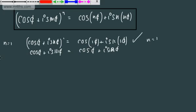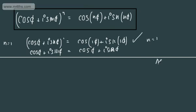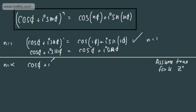Our inductive step now is to assume that it holds true for n equals k, where k is a positive integer. So our induction says: we've shown it holds true for n equals 1; now assume true for k, where k is a positive integer. So what we can write is: when n equals k, cos θ plus i sin θ to the power of k equals cos kθ plus i sin kθ.